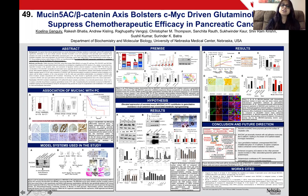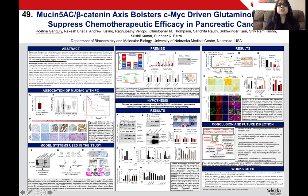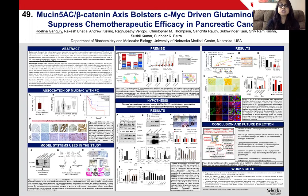TCGA dataset analysis revealed that low MUC5AC expressing patients responded much better to gemcitabine compared to high MUC5AC expressing patients. Depletion of MUC5AC from human pancreatic cancer cell lines made them more sensitive to gemcitabine. Interestingly, there was a significant increase in MUC5AC expression and significant enrichment of MUC5AC expressing clones upon gemcitabine treatment.